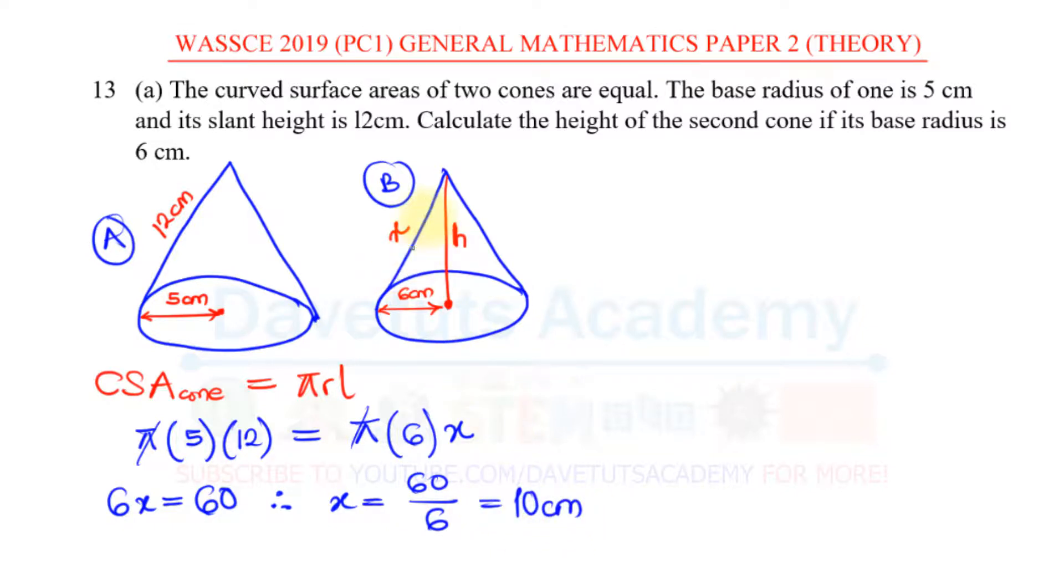But we just got the slant height if we stop there we are not going to get our full mark. What we are being asked is to get the height of the second cone so to get the height of the second cone we can see that we now have something like this from the cone.